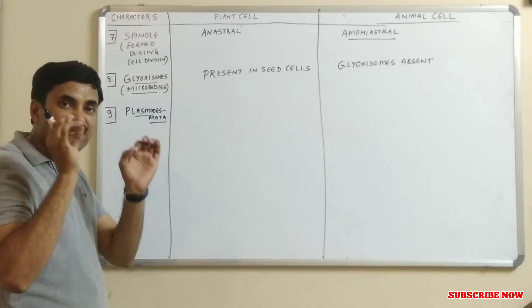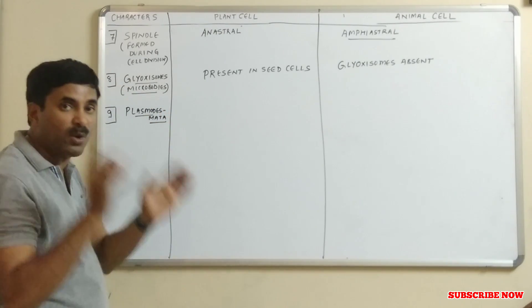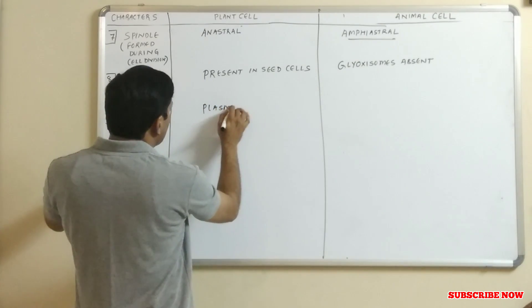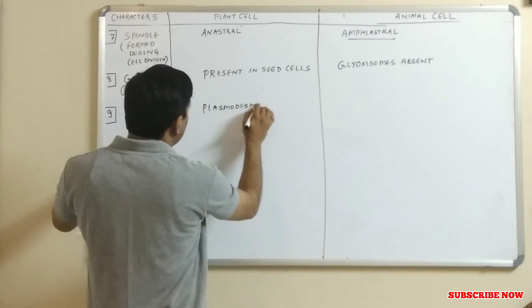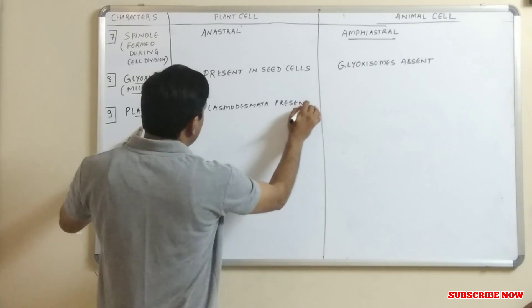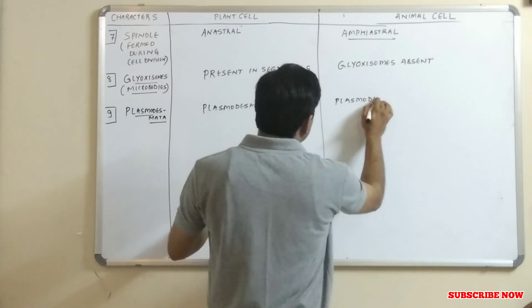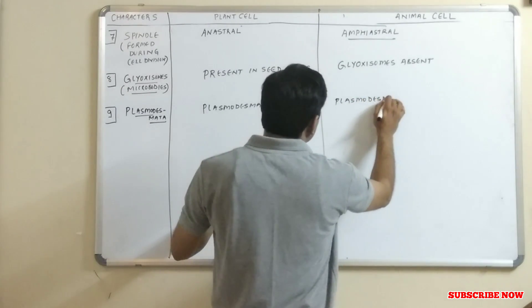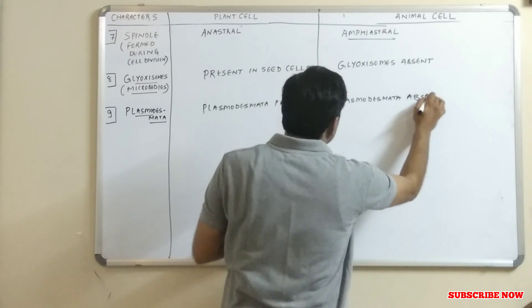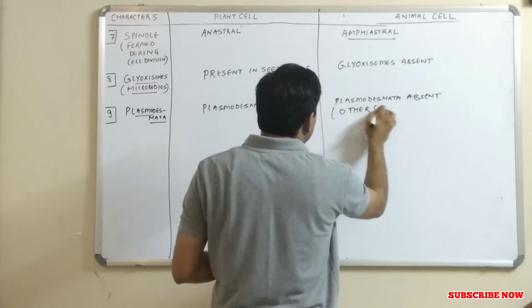In the plant cell, plasmodesmata are present. In the animal cell, plasmodesmata are absent, but other cell connections are present.